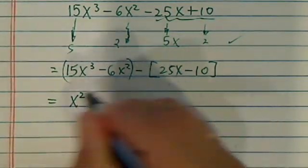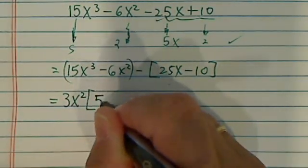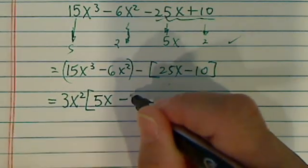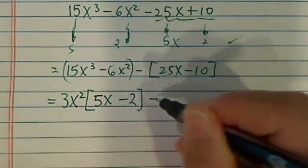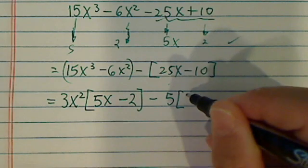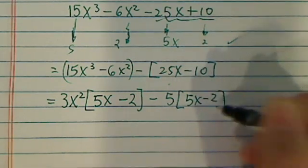I have x² that's common, I have a 3 that's common, and then I have a 5 left, 5x here, and then the minus 2 here left. Minus, I have a 5 common here, and then I have a 5x minus 2, okay.